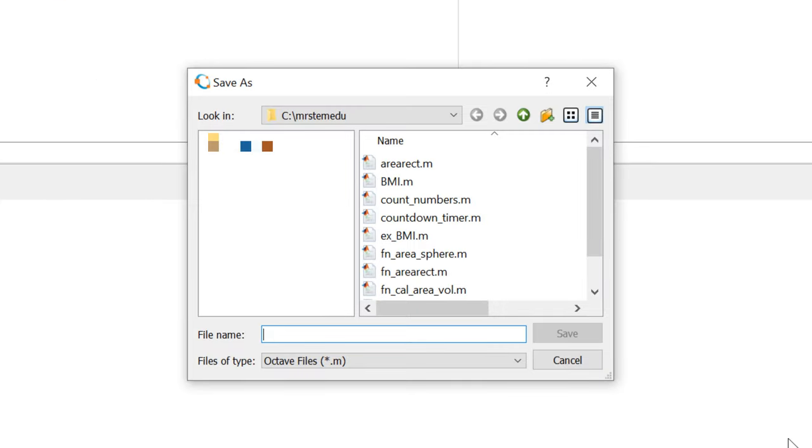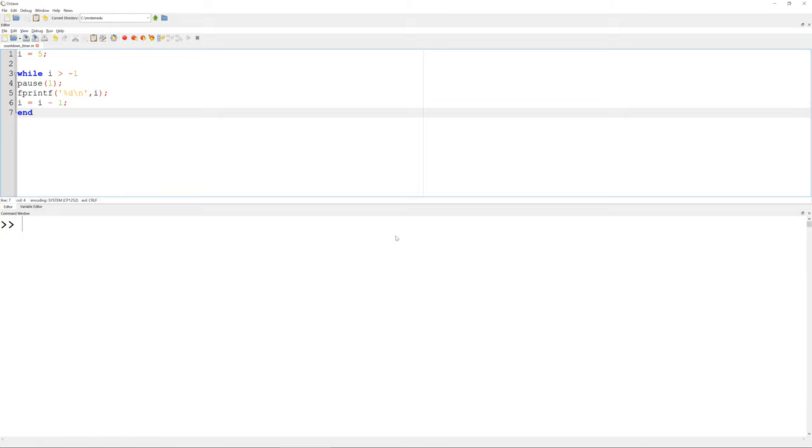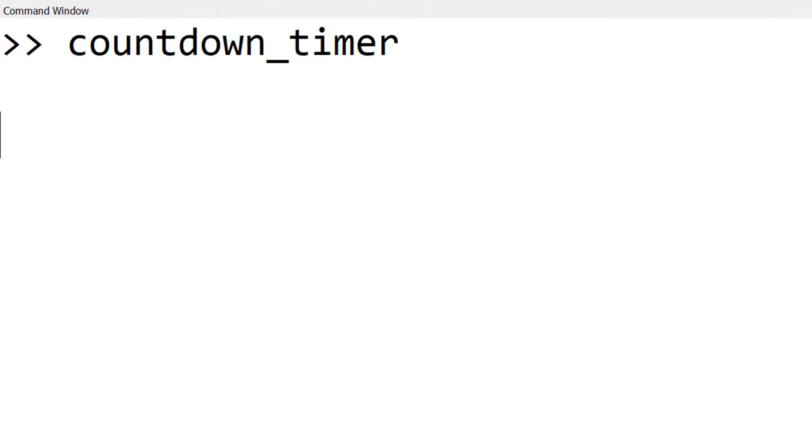You can save the script with the countdown_timer.m and you can run to see the countdown timer starting from 5 to 0 in the command window.